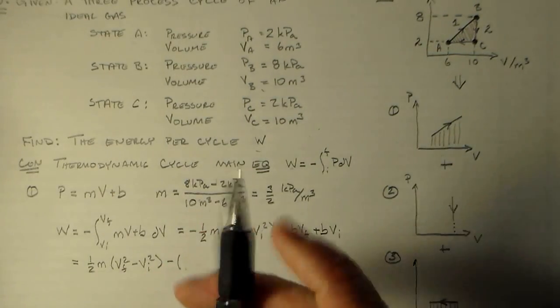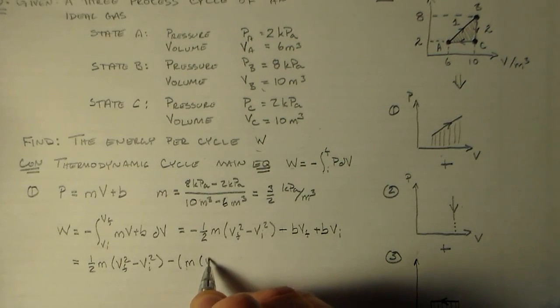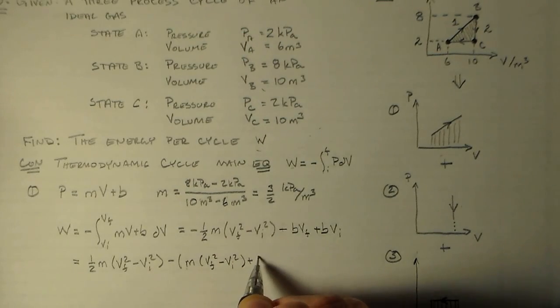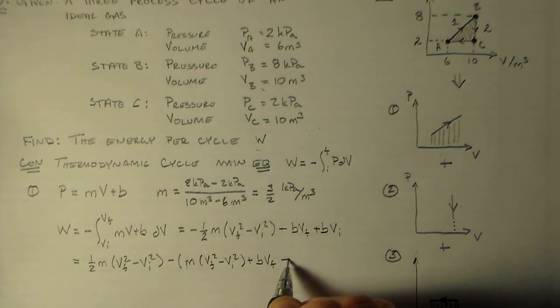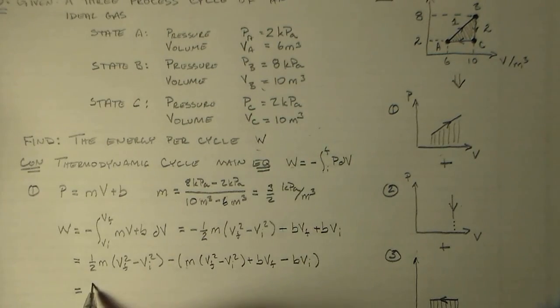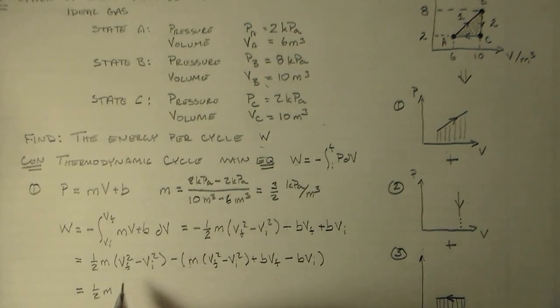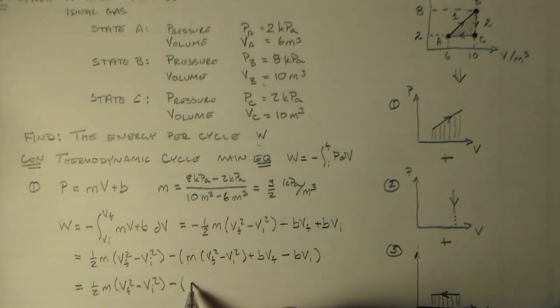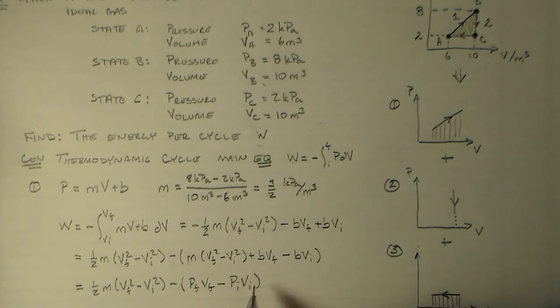And then I have minus M VF squared minus VI squared, plus PFVF minus PiVi. And I have all these numbers now.